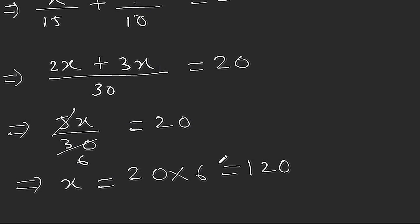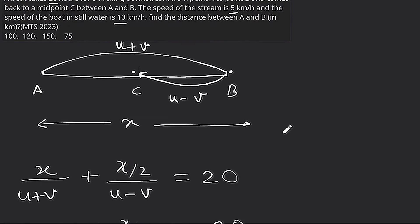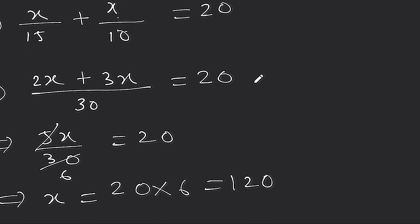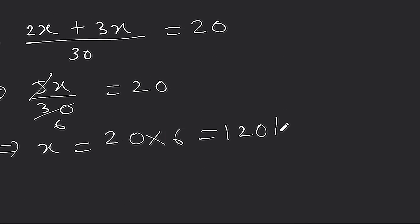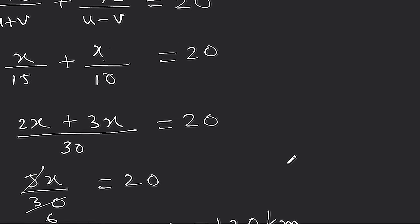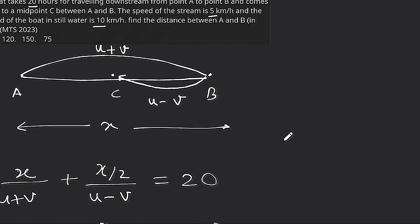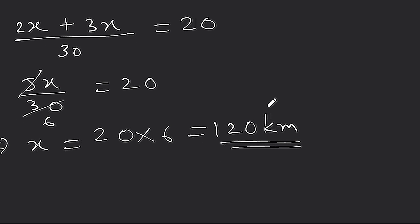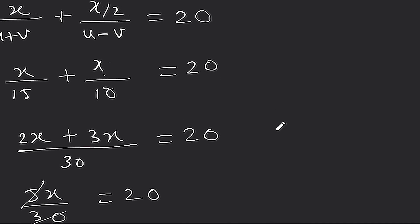Now the unit here is kilometres. Looking at what was given — time was given and we found the distance from A to B is 120 km. So option B is the correct answer. I think this is clear. This is how you solve this type of question.